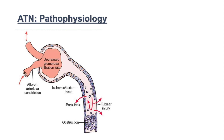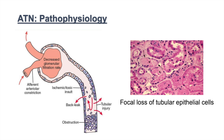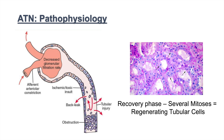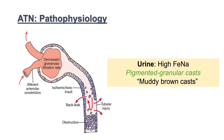The pathophysiology of acute tubular necrosis is in its name — it involves the renal tubules. There is tubular injury due to ischemic or toxic insult, which at the beginning leads to focal loss of tubular epithelial cells. Later on, it goes through a recovery phase where we can see regeneration of tubular cells. All of this leads to urine with high fractional excretion of sodium and the excretion of pigmented granular casts, or muddy brown casts, in ATN.